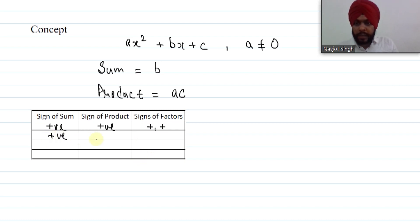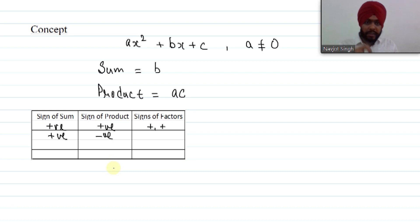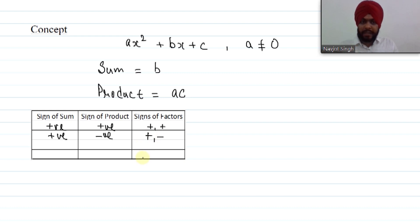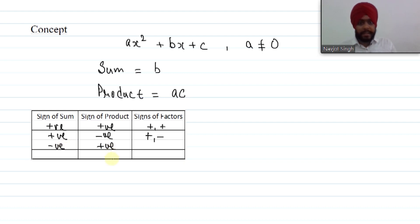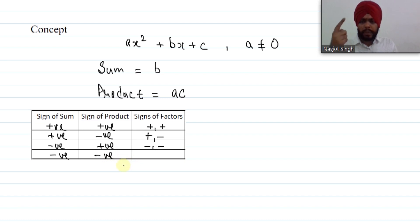Next possibility: sum is positive and product is negative. Since the product is negative, the signs of both factors are opposite. Because the sum is positive, the positive factor is bigger — so the factors are positive and negative. Then: if the sum is negative and product is positive, both factors have the same sign, and since the sum is negative, both factors are negative and negative. Finally, if both sum and product are negative, the signs of factors are opposite, and since the sum is negative, the bigger factor is negative and the smaller factor is positive.